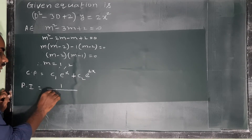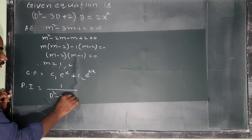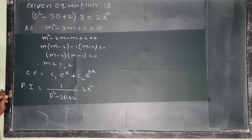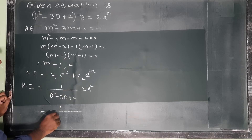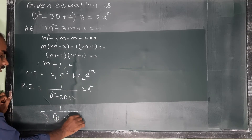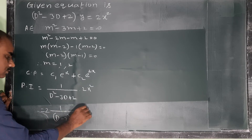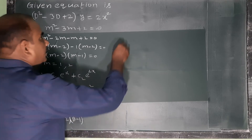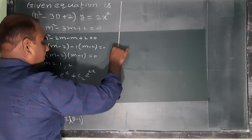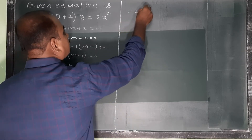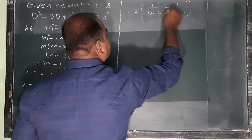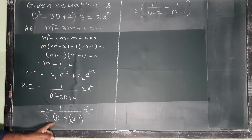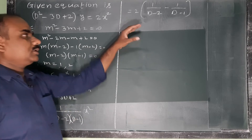Next, the particular integral (PI) is equal to 1/(D² - 3D + 2) · 2x². The operator factors as 1/((D - 2)(D - 1)). Using partial fractions, this becomes 2 · [1/(D - 2) - 1/(D - 1)].